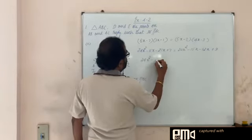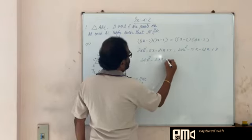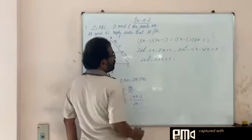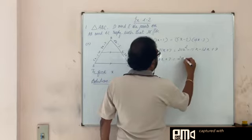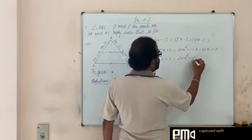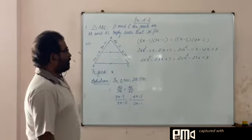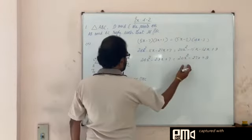24x squared minus 8x minus 21x gives minus 29x plus 7 is equal to 20x squared minus 15x minus 12x gives minus 27x plus 9. We take all the terms to the left hand side.